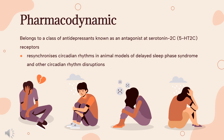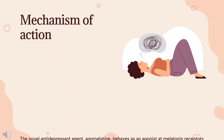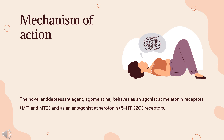Controlled studies in humans have shown that agomelatine is as effective as the SSRI antidepressants paroxetine and sertraline in the treatment of major depression. Mechanism of action: The novel antidepressant agent agomelatine behaves as an agonist at melatonin receptors MT1 and MT2, and as an antagonist at serotonin (5-HT) 2C receptors.